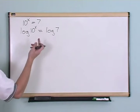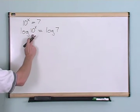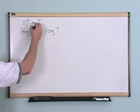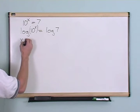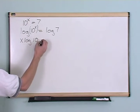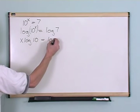Log of 10 to the x, remember when you have an exponent inside and you're taking the logarithm of something with an exponent, you can take that exponent out. So that becomes x times log of 10 equals log of 7.